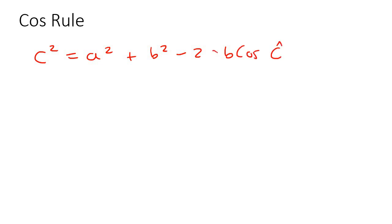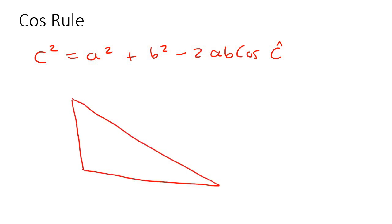Let's just quickly write that a little bit better. Now what I'm going to do is make a random little triangle and put some random letters. So let's say this is V, W, Y, and then the angles — they usually have capital letters — so I'll say something like P, R, and T.